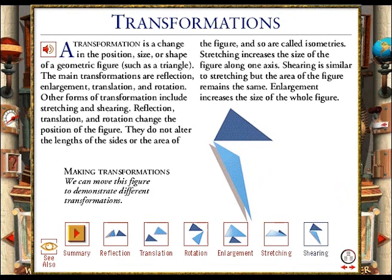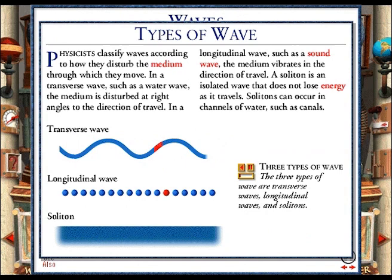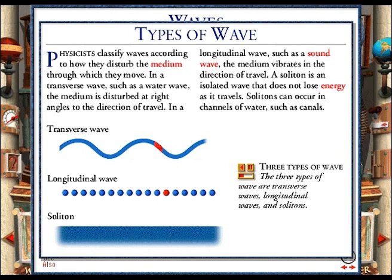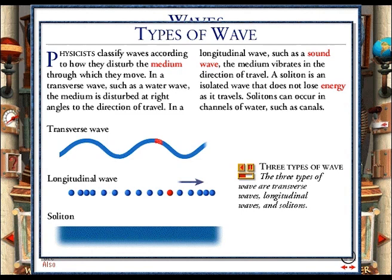In a transverse wave, the disturbance of the medium is perpendicular to the direction of travel. Watch the red segment of this transverse wave. Its motion during the passage of the wave is at 90 degrees to the motion of the wave. In a longitudinal wave, the disturbance of the medium is parallel to the direction of travel. Watch the red segment of this longitudinal wave. Its motion during the passage of the wave is parallel to the motion of the wave. A soliton is an isolated wave that travels without dispersing its energy.